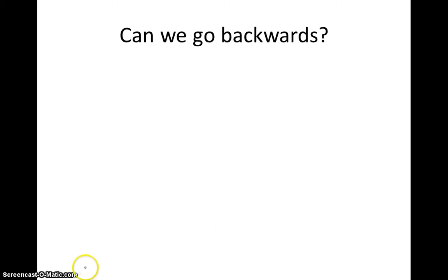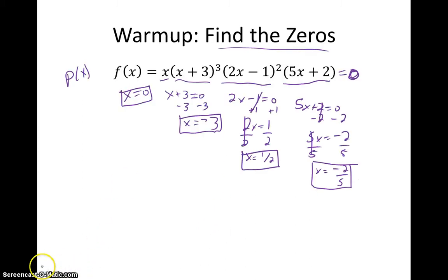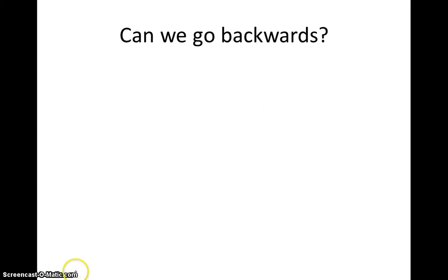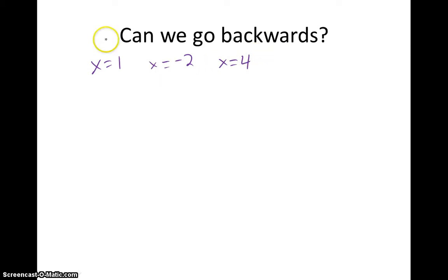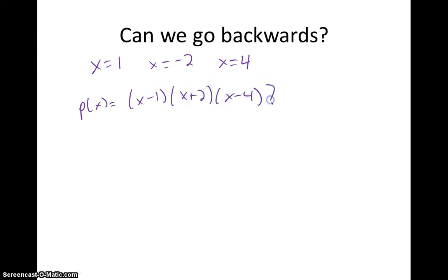So now what Factor Theorem is all about is: can we go backwards? If I tell you the zeros of a polynomial are negative 2 fifths, 1 half, negative 3, and 0, could we get to this equation? Let's take a look. So if the zeros of a polynomial are 1, negative 2, and 4, could I say that polynomial is equal to x minus 1 times x plus 2 times x minus 4? The answer is, in a sense, yes. There might be more than one solution, but these are for sure going to be factors of that polynomial.